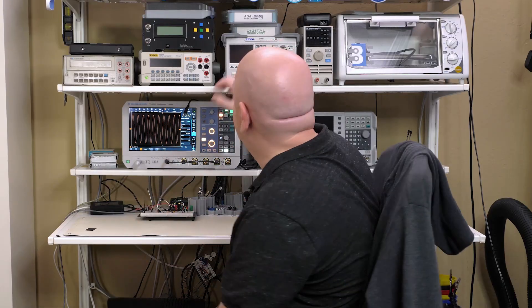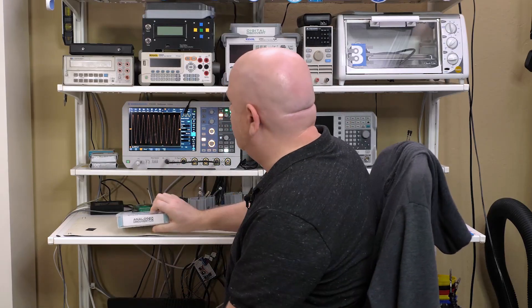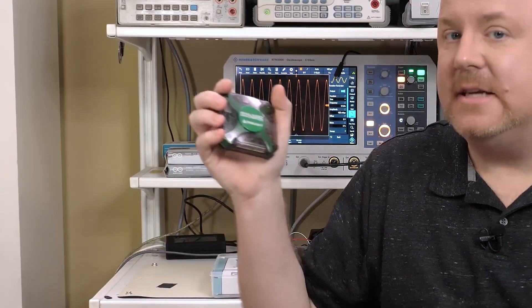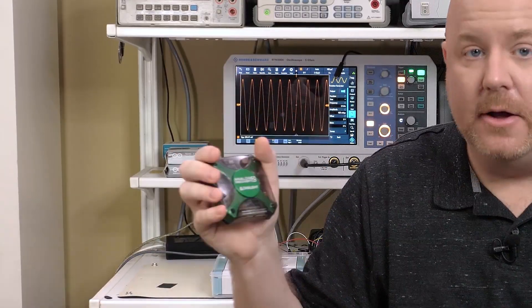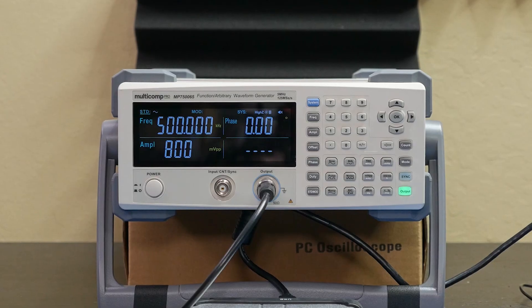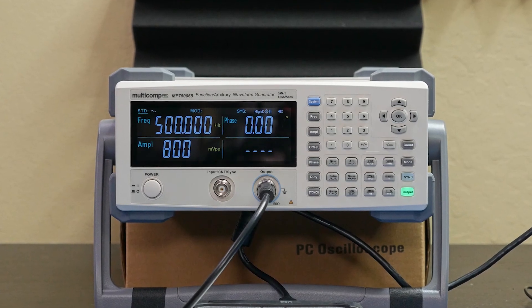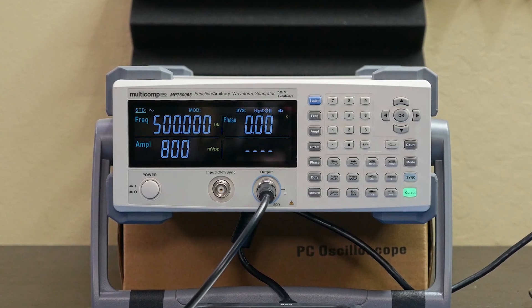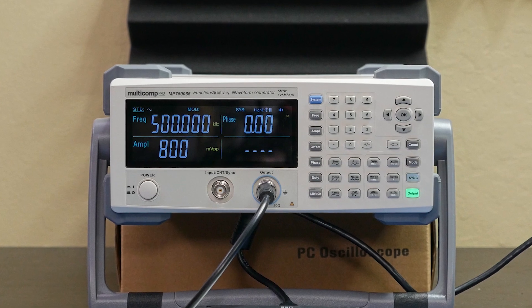So, when buying a new scope, I recommend looking for one that already has the generator. One more option are these all-in-one instruments like the Analog Discovery 2. This has function generation capability as well. If the integrated options do not work for you, then one like this multi-comp is a good option. Look for something that has multiple functions and supports modulations and sweeps. Just make sure its frequency is fast enough for your application.